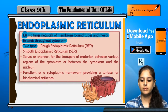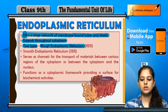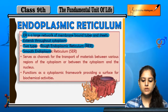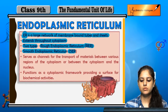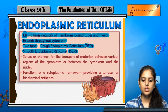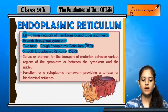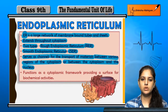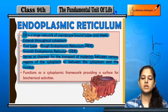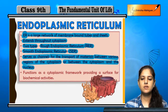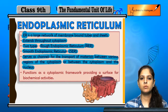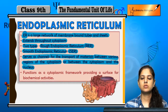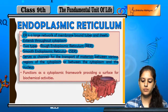There are two types of endoplasmic reticulum: rough endoplasmic reticulum, known as RER, and smooth endoplasmic reticulum, known as SER. The main function of the endoplasmic reticulum is that it serves as a channel for transport of materials between various regions of the cytoplasm, and between the cytoplasm and the nucleus.